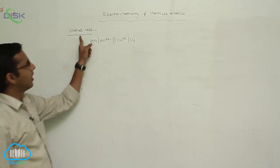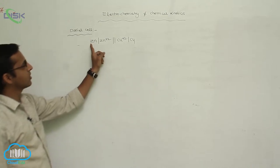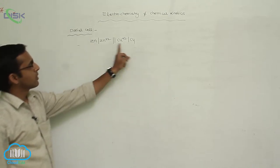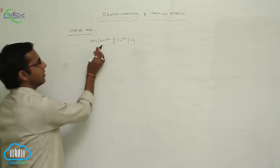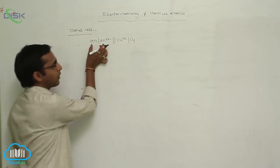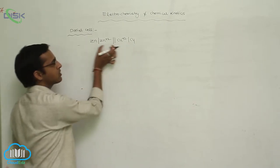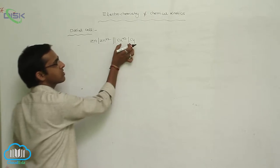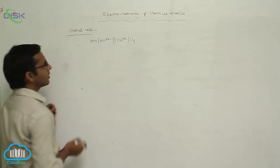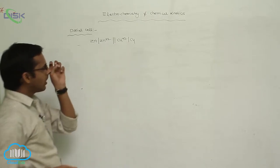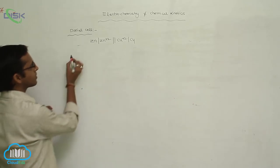The Daniell cell, or the galvanic cell reaction, is represented here. This is your anode electrode, this is the cathode electrode — anode means oxidation potential, cathode means reduction potential. For this, we calculate the EMF of the cell.